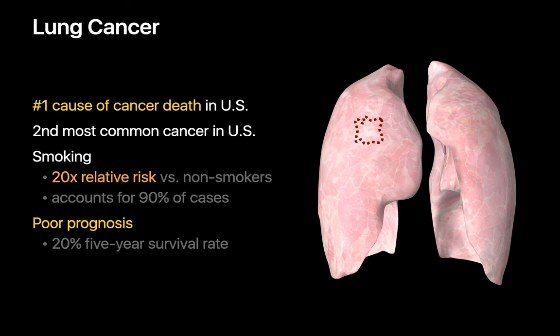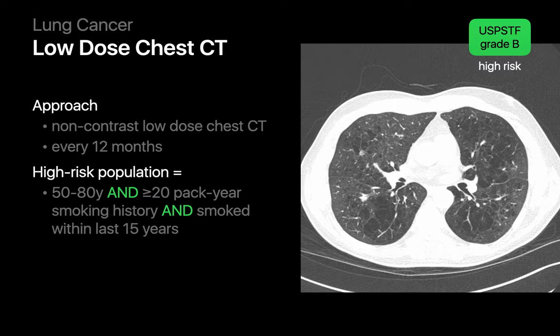Lung cancer is the top cause of cancer death in the United States. Smoking results in a 20-fold increase in relative risk for lung cancer, and 9 out of 10 lung cancers are attributable to smoking. Since many lung cancers are diagnosed at a later stage, the average 5-year survival rate for lung cancer is only around 20%. The use of non-contrast low-dose chest CT, performed at least once per year, is currently recommended by the USPSTF for patients at high risk for lung cancer, defined as someone between the ages of 50 and 80 with a 20 or more pack-year smoking history who has smoked any time in the last 15 years.